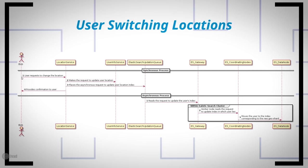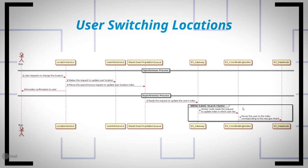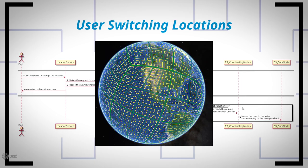In the synchronous part, the user sends a request to the location service, which passes the user's location to the user info service. That service puts the update request into an ElasticSearch update queue and sends a success message to the user so they can immediately see recommendations from the new location. In the background, the request is picked up from the queue and ElasticSearch coordinating nodes update the index in which the user currently resides, allowing them to show up in recommendations at the new location. Google S2 again plays a key role in identifying the correct index.